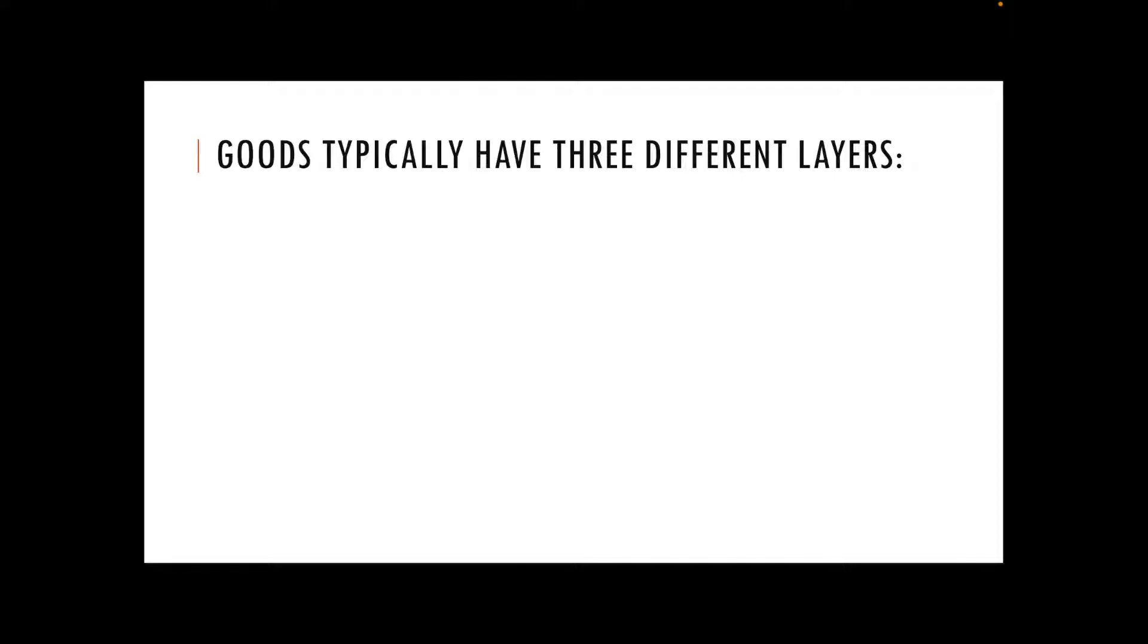Our goods typically have three different layers. Your first layer is the primary packaging, which is the wrapping or container handled by the customer. So for example, if we think about a bar of chocolate, the primary packaging would be the Cadbury's wrapper round your dairy milk.